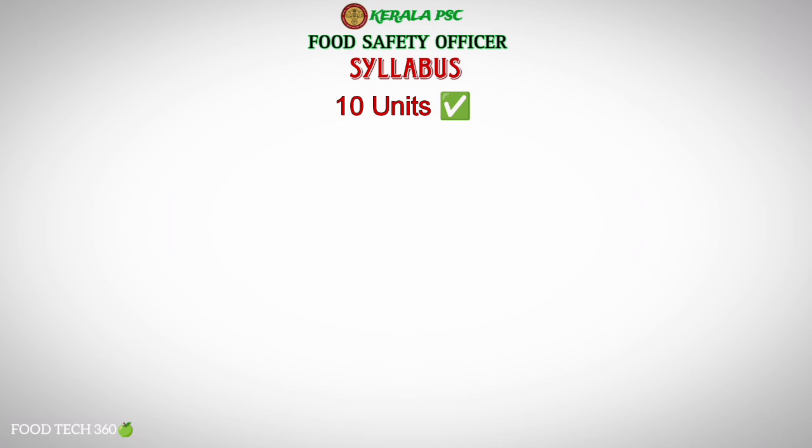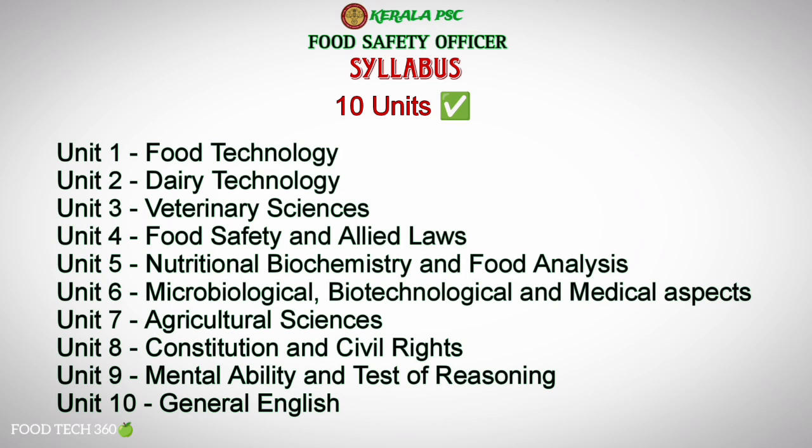There are totally 10 units in the syllabus. Unit 1: Food Technology. Unit 2: Dairy Technology. Unit 3: Veterinary Sciences. Unit 4: Food Safety and Allied Laws. Unit 5: Nutritional Biochemistry and Food Analysis. Unit 6: Microbiological, Biotechnological and Medical Aspects. Unit 7: Agricultural Science. Unit 8: Constitution and Civil Rights. Unit 9: Mental Ability and Test of Reasoning. Unit 10: General English.